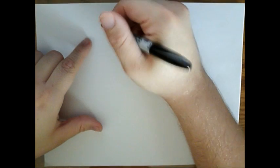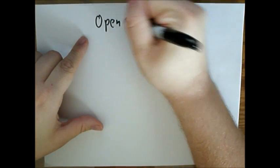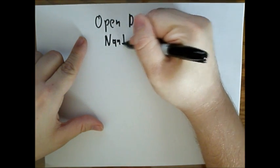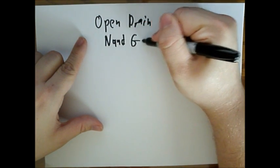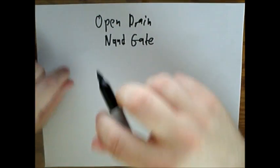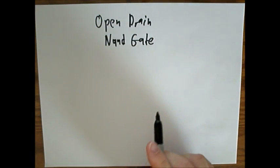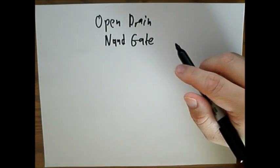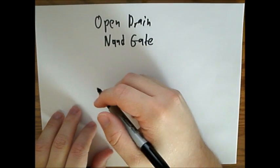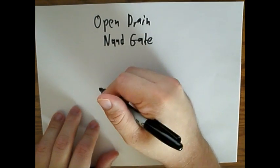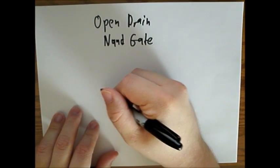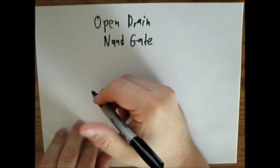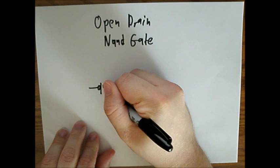Hello, today I'll be talking about the open drain NAND gate. This is a logic gate that functions similar to a regular NAND gate, however the internal circuitry is different, and I'll show you how. So normally, for a regular NAND gate, you would have two P-channel and two N-channel MOSFETs.